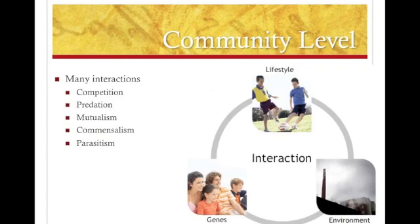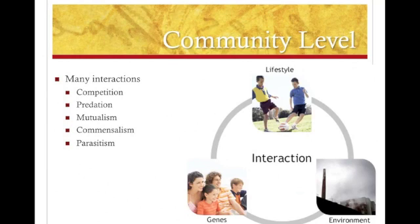So then let's look at the community level. Because at the community you have different species, different populations living there, they interact in different ways. And the five main types of interactions are competition, predation, mutualism, commensalism, and parasitism. Each one of these interactions affects the community in a different way.